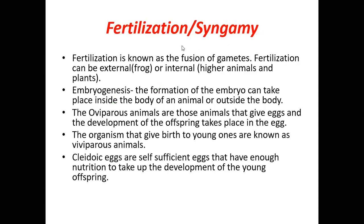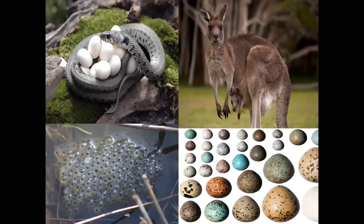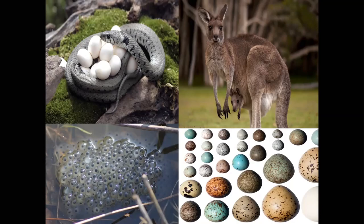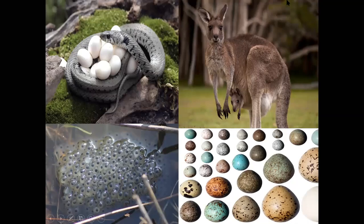Snake eggs are also cleidoic eggs. Kangaroos are viviparous animals that give birth to young ones. Frog eggs are cleidoic but the eggs only develop into larvae, not directly into adult frogs. Bird eggs are also cleidoic. With that, today's chapter is finished.